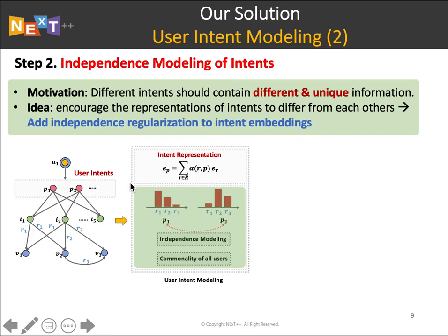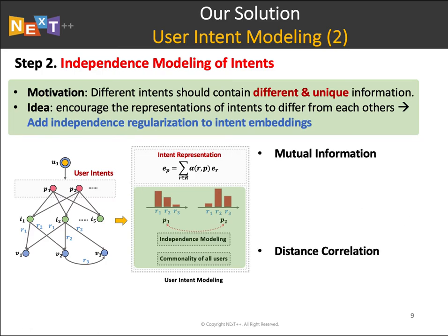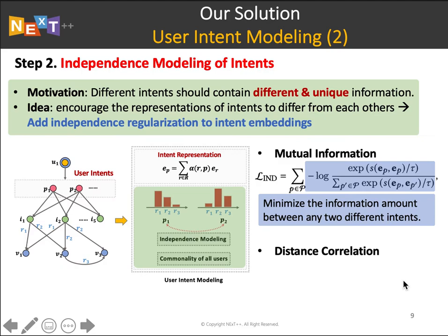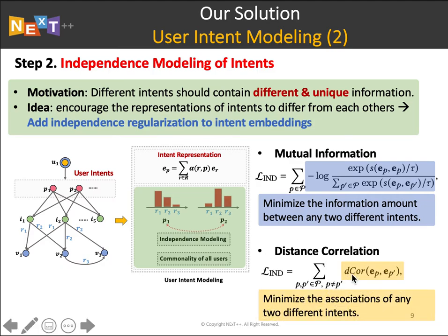We offer two options for independence regularization: mutual information and distance correlation. For mutual information, we minimize the information shared between any two different intent embeddings, which coincides with contrastive learning in recent self-supervised learning work. The second option is distance correlation, where we minimize the association between any two different intents — taking both linear and nonlinear correlations into consideration. Through this way, we can obtain clear boundaries between different intent semantics.